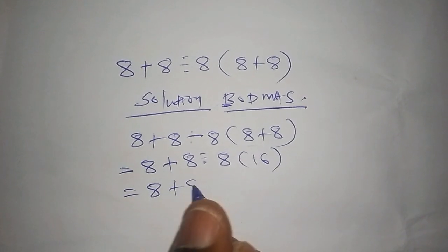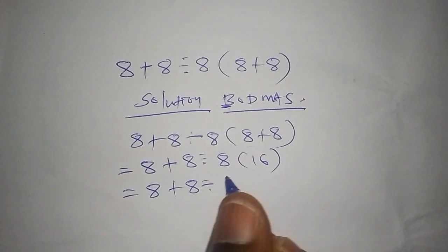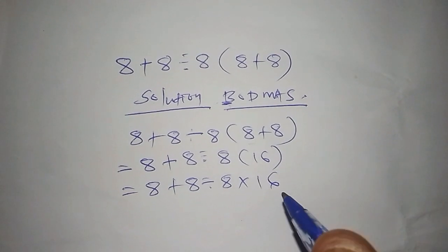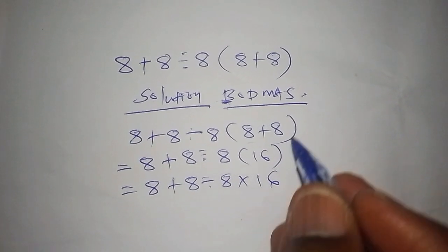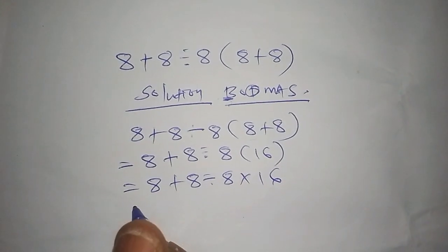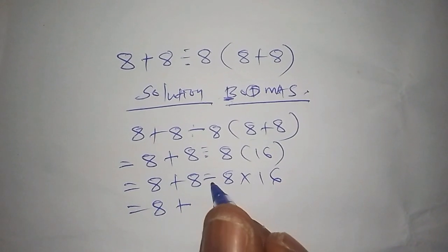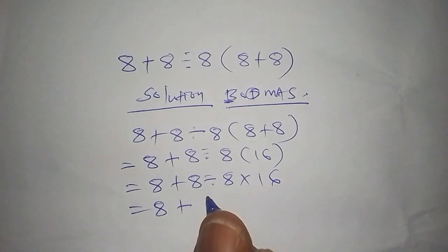Let's now move to the division sign. This equals 8 + (8 ÷ 8 is 1), so we shall have 1 × 16.